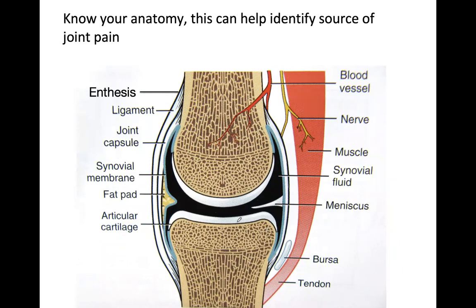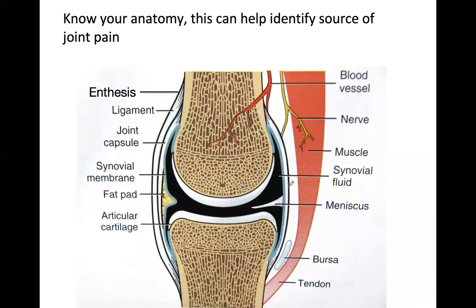Just to remind you of your anatomy — joints are very complicated. You can have tenderness at the enthesis, where the ligament attaches to bone, which we see in the seronegative spondyloarthropathies. You can also have pain from the joint capsule, the synovial membrane as in rheumatoid arthritis, articular cartilage, the meniscus, synovial fluid, nerves, bursae, and tendons.